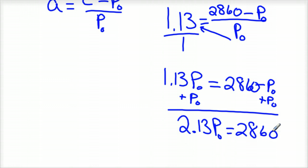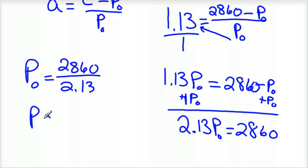And again, how did I get that 2.13? Well, if there's no number in front of the variable, we can put a 1 there. So 1 times P is still P. So 1.13 plus 1 is 2.13. And so your initial population then is just divide those two numbers. So it's going to be 2,860 divided by 2.13. So initial population, 2,860 divided by 2.13 is equal to around 1,342 horses.